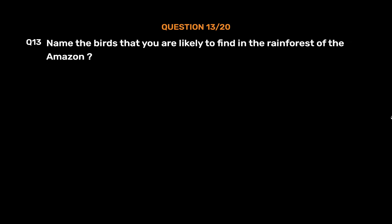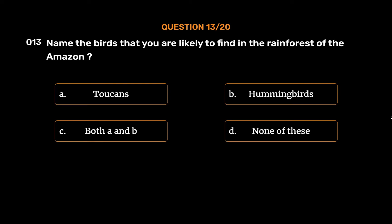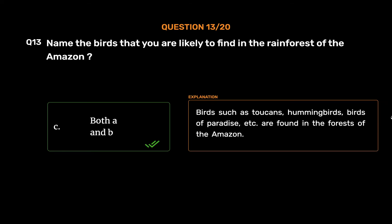Question number 13. Name the birds that you are likely to find in the rainforest of the Amazon. Option A: Toucans. Option B: Hummingbirds. Option C: Both A and B. Option D: None of these. The correct answer is Option C, Both A and B. Birds such as toucans, hummingbirds, birds of paradise, etc. are found in the forests of the Amazon.